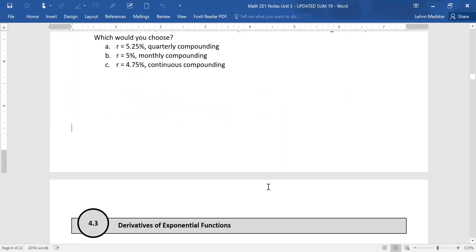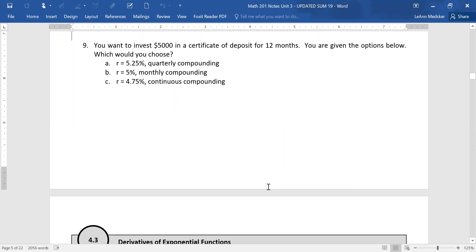So we're just going to work through the three options using the correct formulas and see which one gives us the better return on our investment. If you look at the first option, it is 5.25% quarterly compounding. So we need to make sure we're using the correct formula.